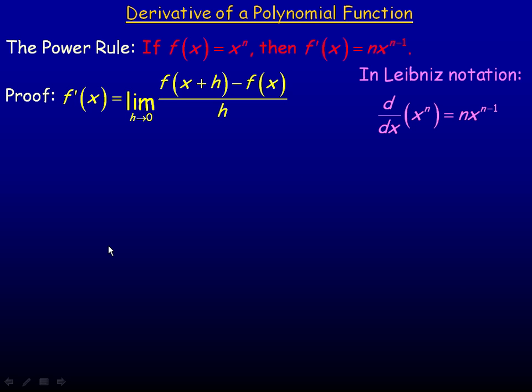In this lesson we'll take a look at the derivative of a polynomial function. We're going to start with the power rule. It says if f of x equals x to the power of n, then the derivative f prime of x is defined to be nx to the n minus 1.